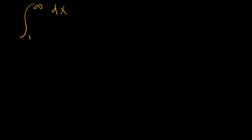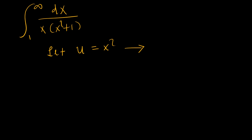Our problem is the definite integral from x equals 1 to x tending to infinity of 1 over x times (x squared plus 1). The initial approach is to substitute u. Let u equal x squared, so that du/dx equals 2x, meaning half du can be used to substitute x dx.